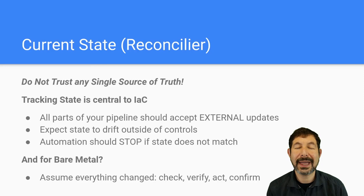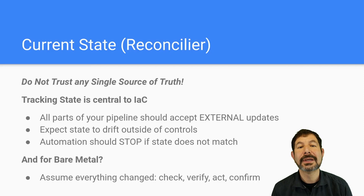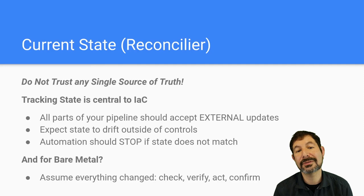One of the things we've built into a lot of the workflows — standard templates, what we call a universal template — is that we check, verify, and confirm as much as possible. The time it takes to do that is minimal compared to the benefits you get from preventing accidental configurations or mistakes. And mistakes are very, very expensive.